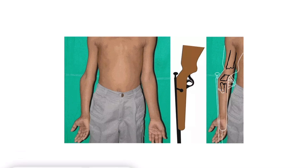The overall deformity is shown with the help of a gun, so the upper limb appears like a gunstock. This is how a supracondylar fracture, if not reduced properly within time, can undergo malunion and lead to this deformity called gunstock deformity.